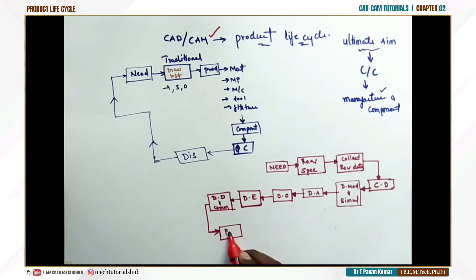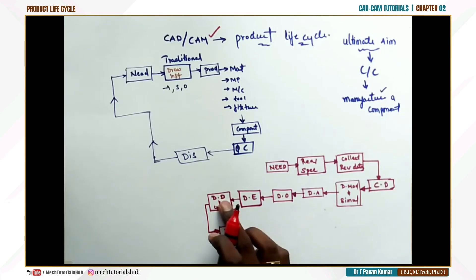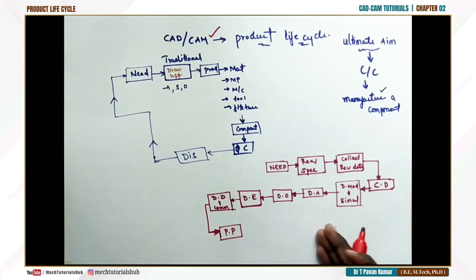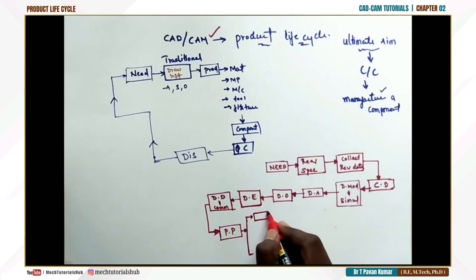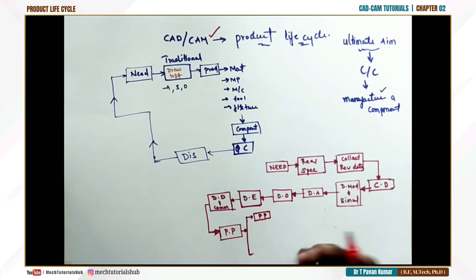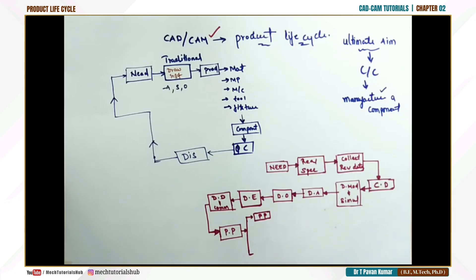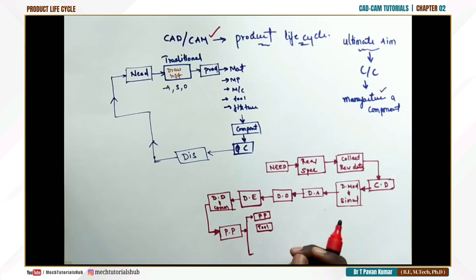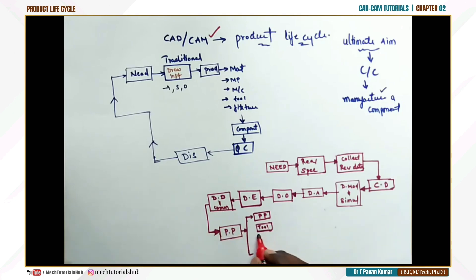This stage is considered process planning. Unless you have a design document and communication between the design and manufacturing teams, the process planner cannot lay out the flowchart. The first step is production planning. Then comes design and procurement of new tools — tools available with the company may not be sufficient, so new tools are designed or procured from vendors.